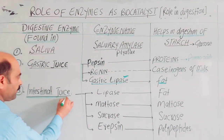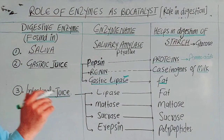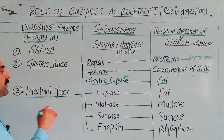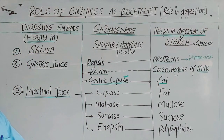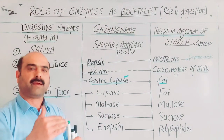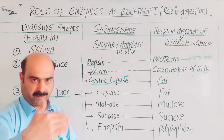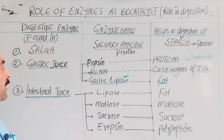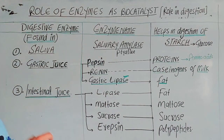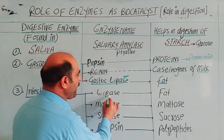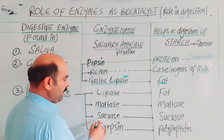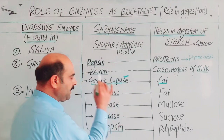Next is intestinal juice, also called pancreatic juice. The small intestine receives pancreatic juice via the pancreatic duct. Note that insulin controls blood sugar but is different from digestive enzymes. The pancreatic juice contains four enzymes: lipase enzyme, maltase enzyme, sucrase enzyme, and erepsin enzyme.